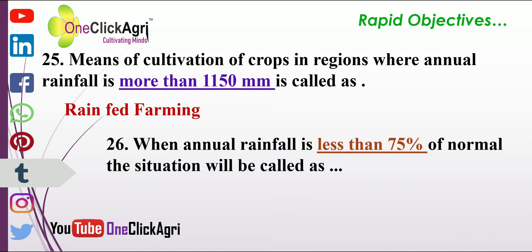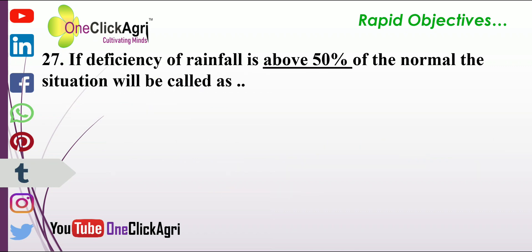Where annual rainfall is less than 75 percent of normal, the situation is called a drought. If the deficiency of rainfall is above 50 percent of the normal, the situation is called a severe drought.